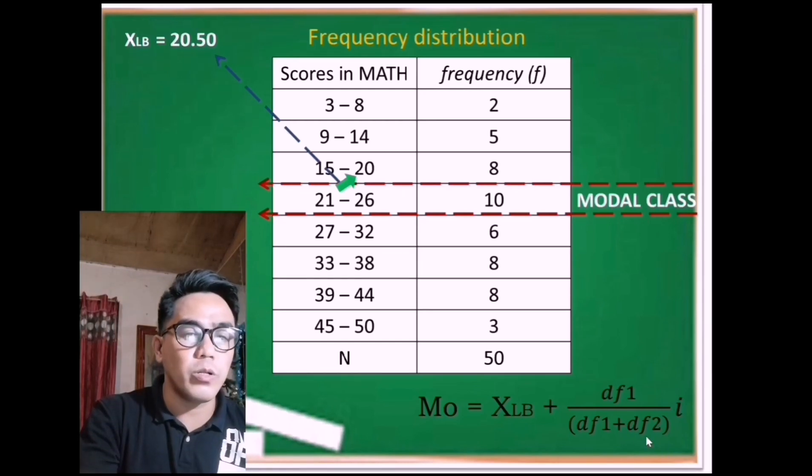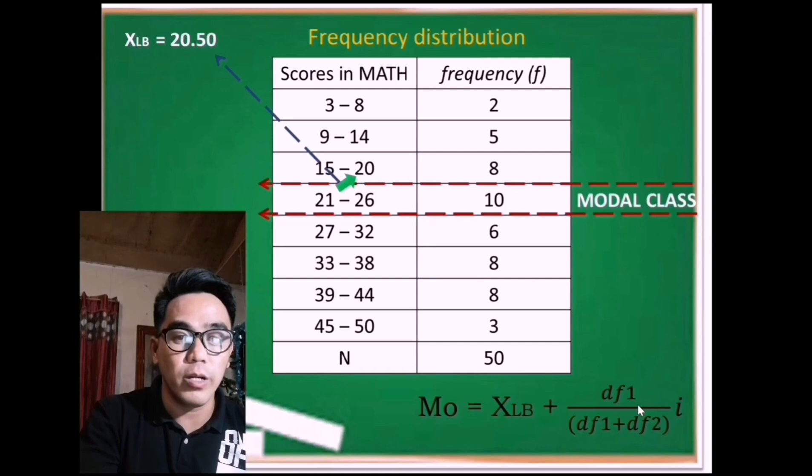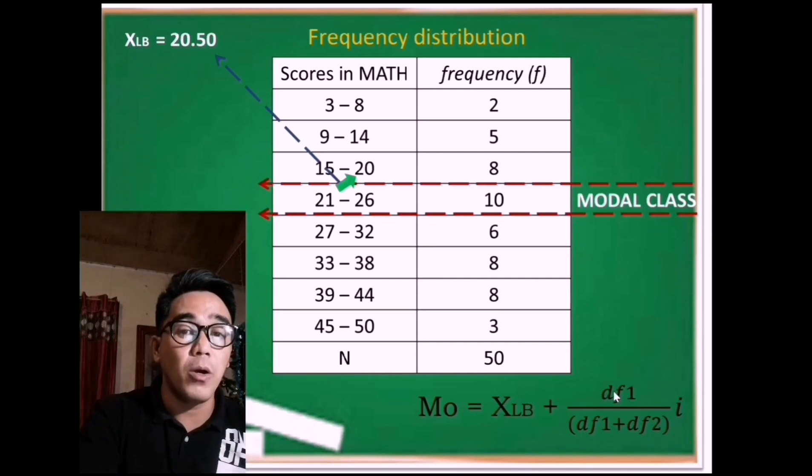Second, we're going to find the df sub 1. Remember, the df sub 1 is the difference between the modal class frequency and the frequency above it. The problem here is we don't know yet the frequency of the modal class. Since this is the row for the modal class and this is the column for the frequency, definitely the frequency of the modal class is 10.